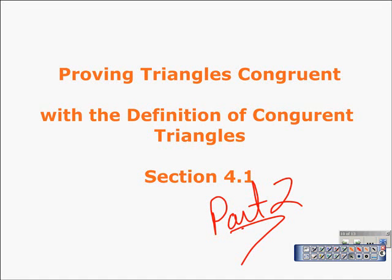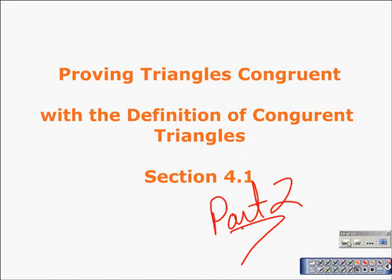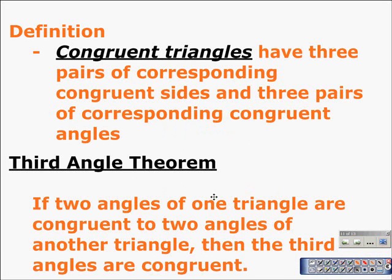Welcome to part two of section 4-1. We're going to take a look at proving triangles congruent with the definition of congruent triangles. To prove triangles congruent with the definition, it's beneficial to understand that congruent triangles have three pairs of corresponding congruent sides and three pairs of corresponding congruent angles.